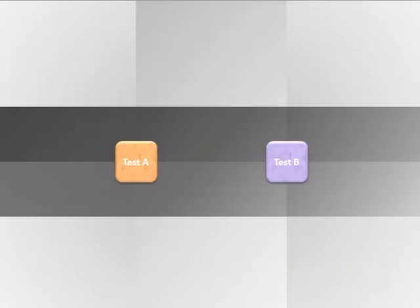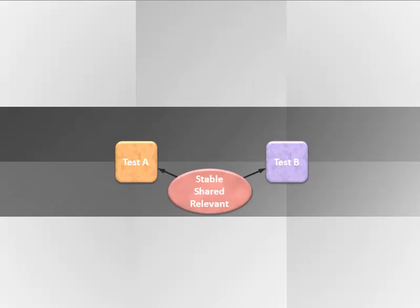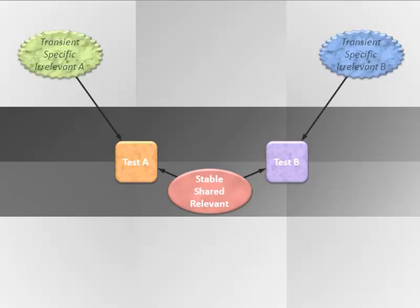Suppose we have two tests, test A and test B, and we want to combine them into a composite score. One reason you might want to make a composite score is that you believe both tests are designed to measure some construct — that is, there's some influence that both tests are measuring. Typically, this influence is a stable influence. In all measurement, and especially in psychological measurement, there is measurement error — some influence on test performance that is specific to test A and another one that's specific to test B, and the influence is transient.